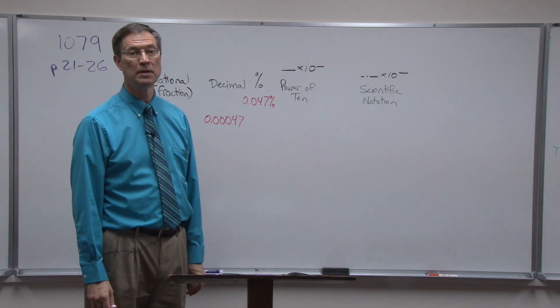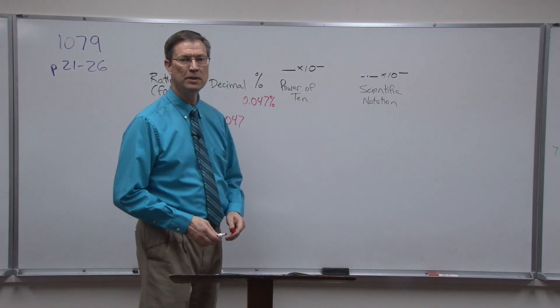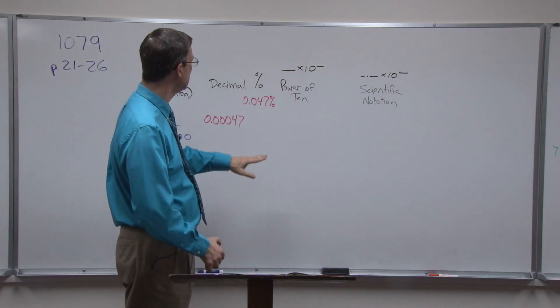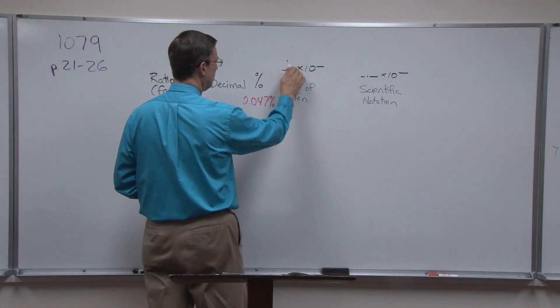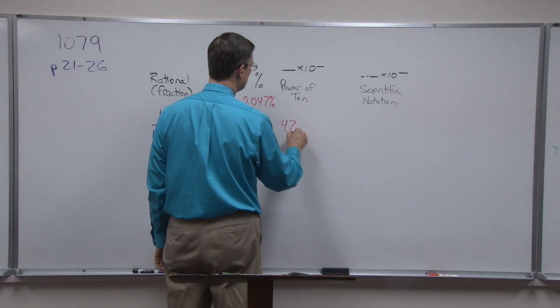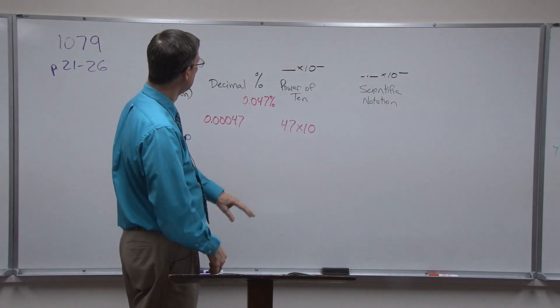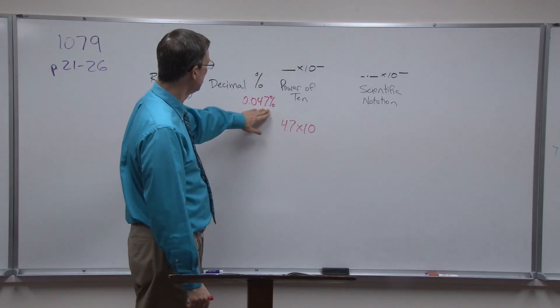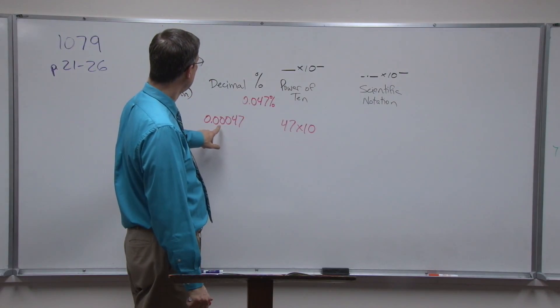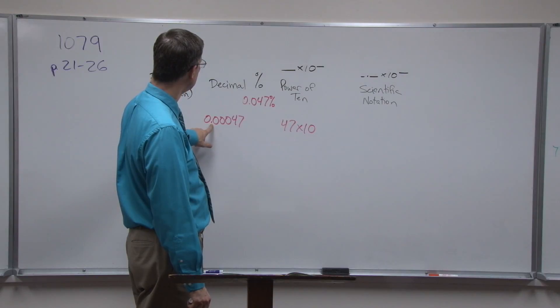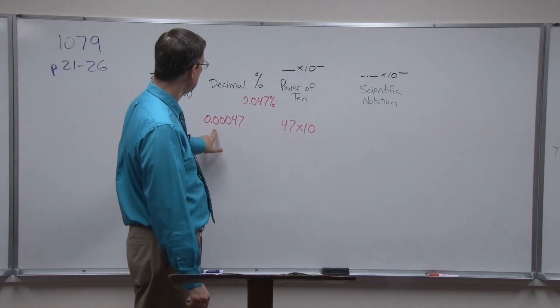Now let's do a power of 10. What the paces mean by power of 10 is taking the non-zero digits and just write them down. So this would be 47, and then times 10 to some exponent. Now we go back to this number, don't we? Ignore this, that'll confuse you. Just go back to the decimal number.